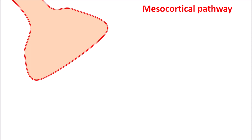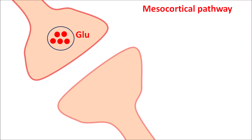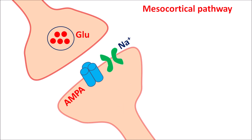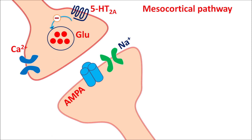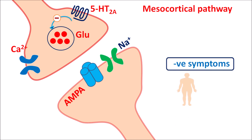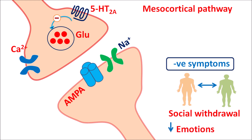At the mesocortical pathway, glutamate plays an important role. The presynaptic neurons are equipped with glutamate, and on the postsynaptic neurons, glutamate receptors such as AMPA receptors are present. These are ionotropic receptors coupled with sodium channels. The release of glutamate is controlled by voltage-gated calcium channels on the presynaptic neurons, and 5-HT2A receptors can inhibit this glutamate release.